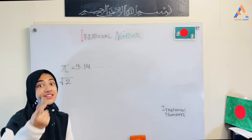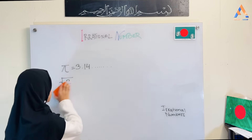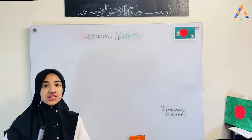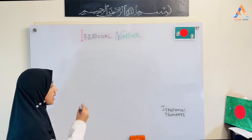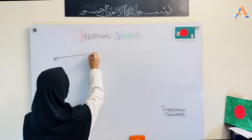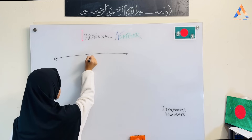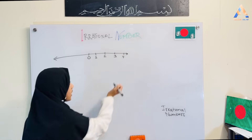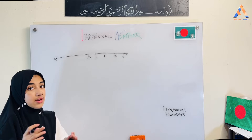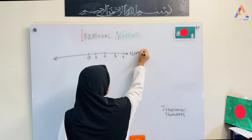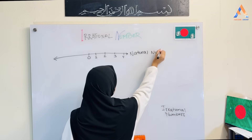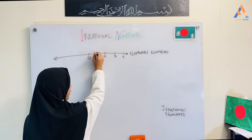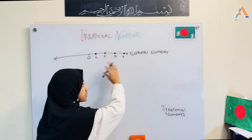Let me show you the number line. The center is 0, then 1, 2, 3, 4, and so on in the positive direction.